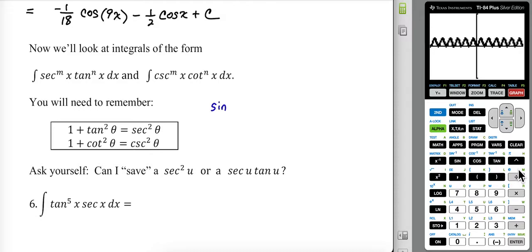We know that sine squared theta plus cosine squared theta equals one. If I divide everything by sine squared theta, I'm going to get one plus cotangent squared theta equals cosecant squared theta. So that's this rule.